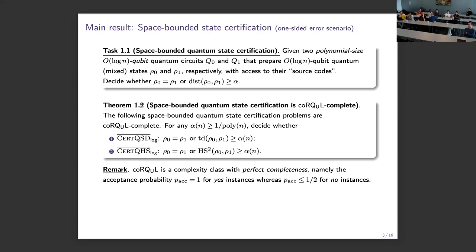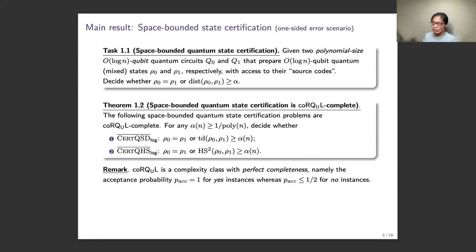The first main result is: the space-bounded quantum state certification problem is complete for the class unitary-coRQL. Here, 'access to source codes' means we have the description of the circuit — we know which gates act on which qubits.